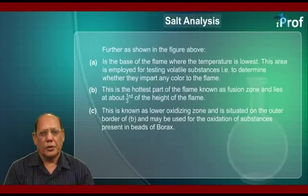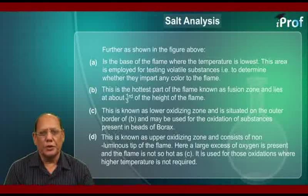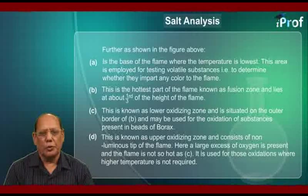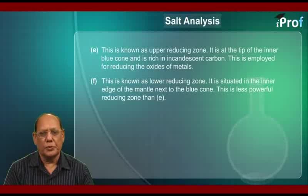C is known as the lower oxidizing zone and is situated on the outer border of B. It may be used for the oxidation of substances present in the beads of borax. D is known as the upper oxidizing zone and consists of the non-luminous tip of the flame. Here, a large excess of oxygen is present and the flame is not as hot as C.